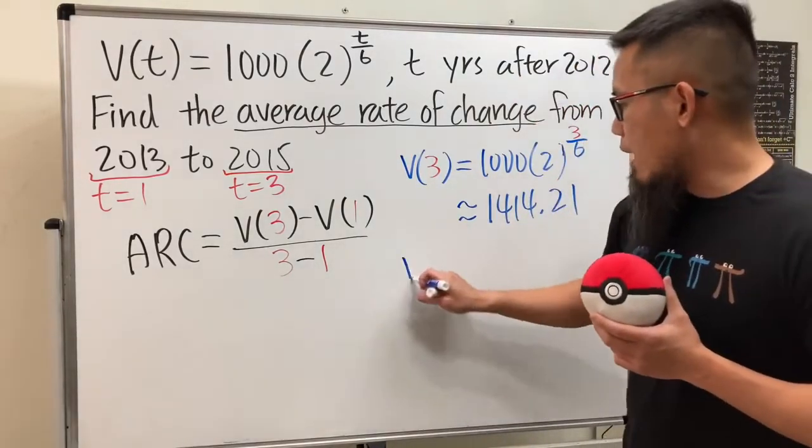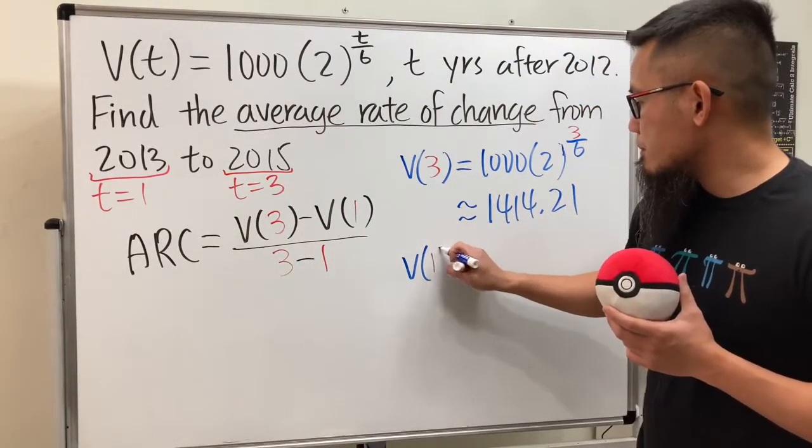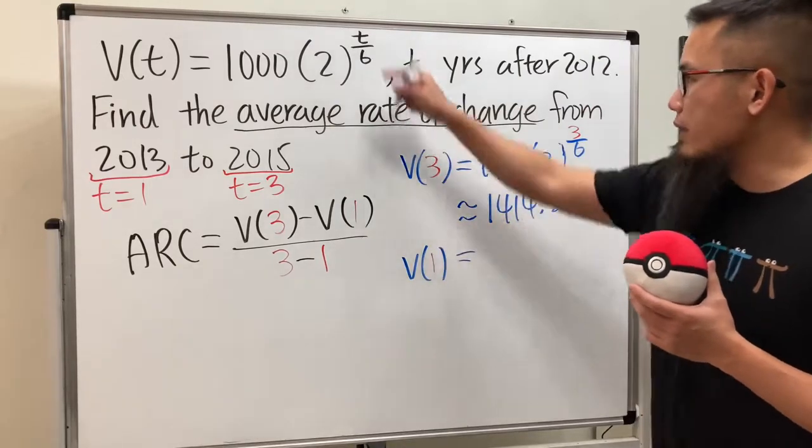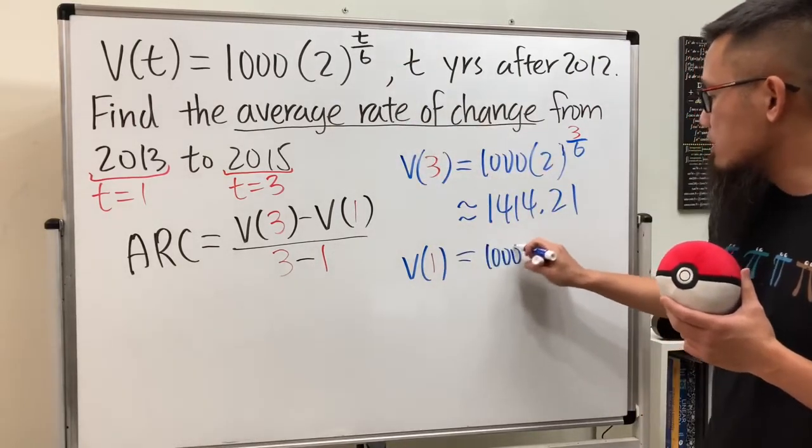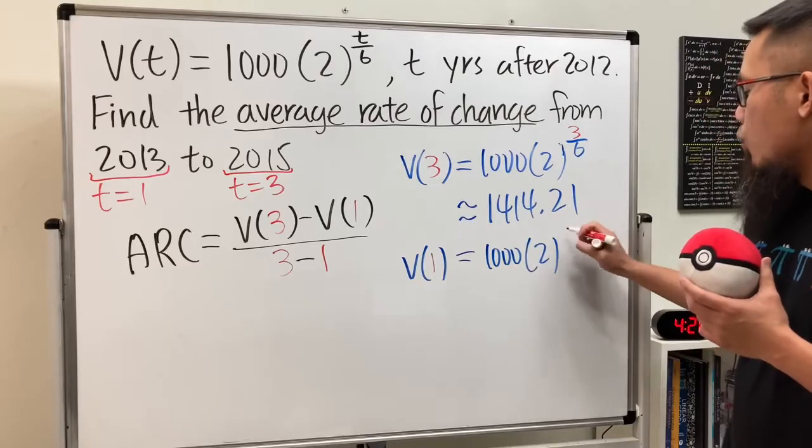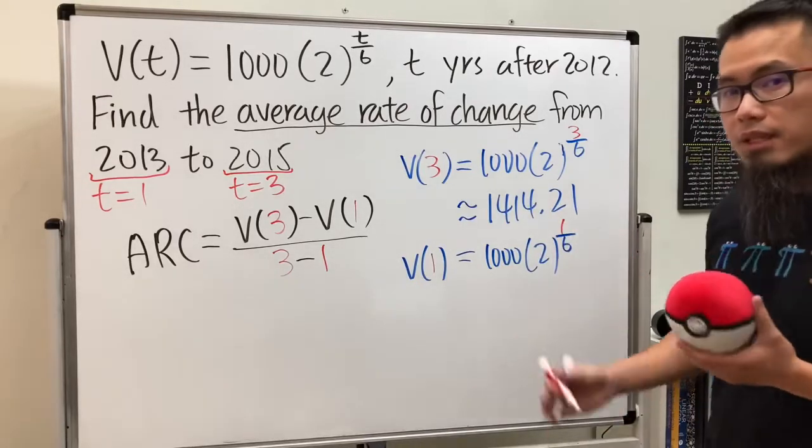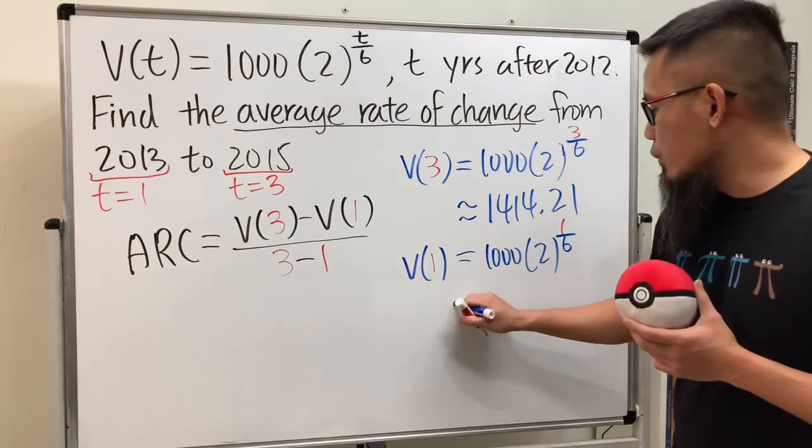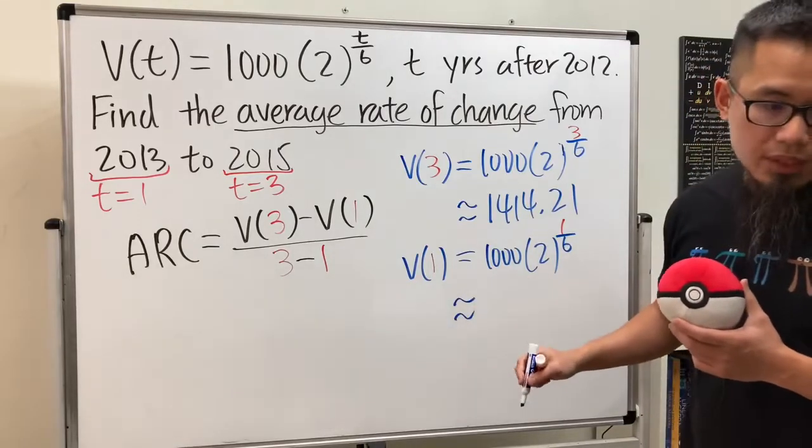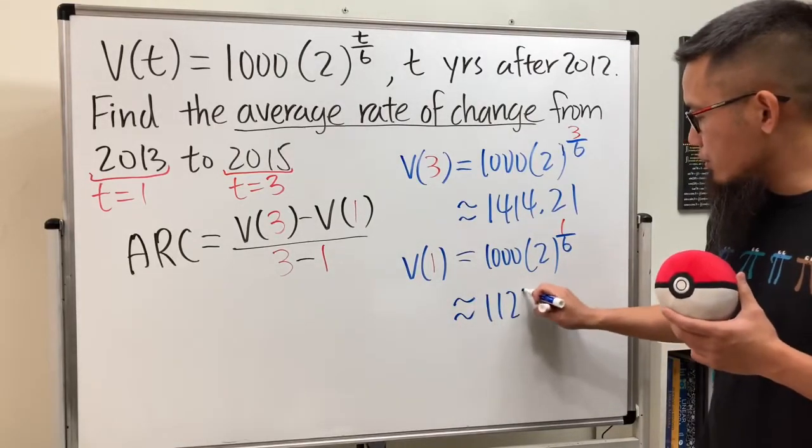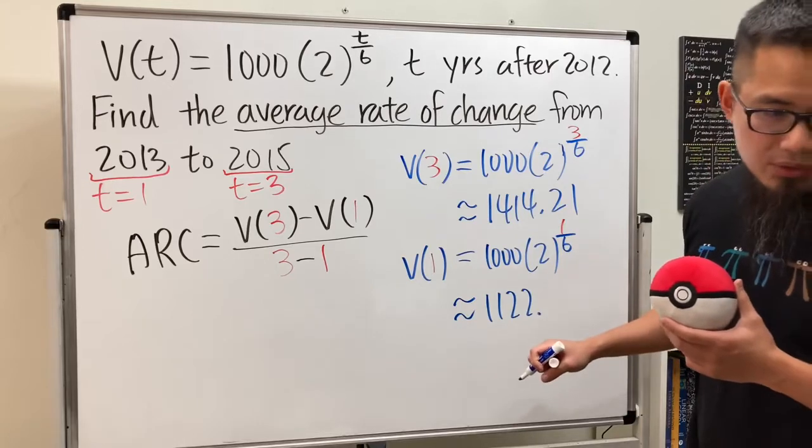Okay, for V(1) we do the same thing. Well, this is equal to, you put the one in there, so we get 1000 times 2 raised to the 1 over 6 power. And again, just use your calculator and you will get approximately 1122.46.